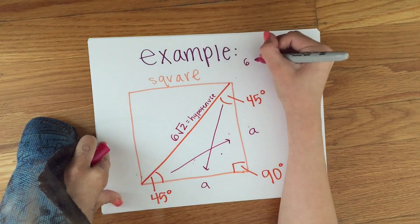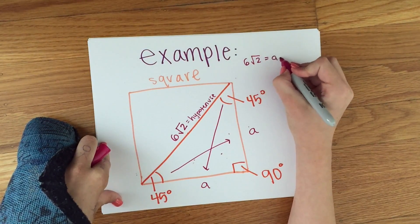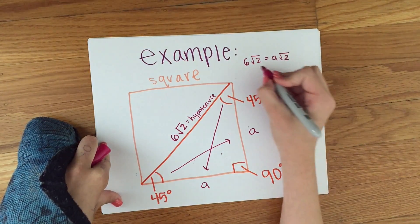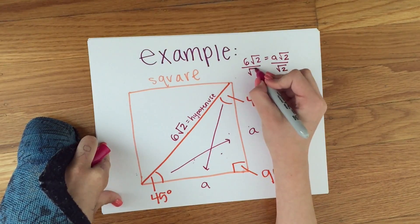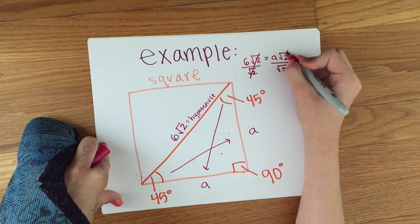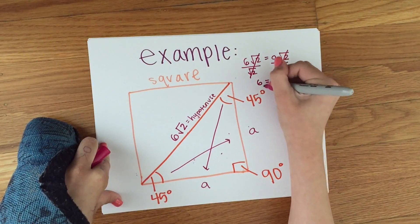The way to solve this would be, you know that 6 root 2 is equal to a root 2. Next, you would divide both sides by root 2, crossing out the root 2s. Now you've found that 6 equals a.